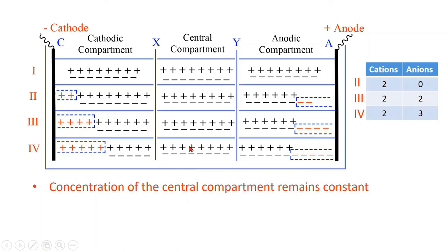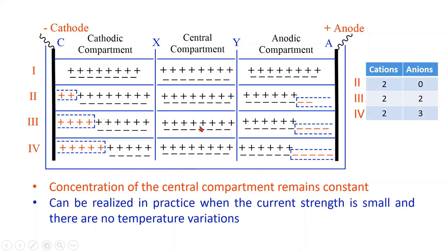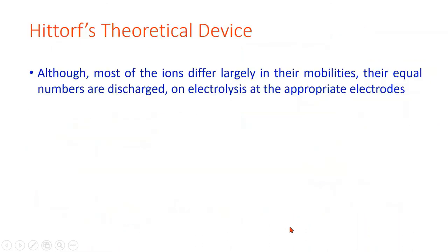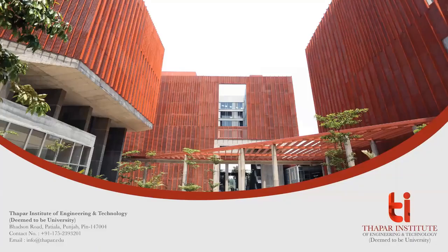The concentration of the central compartment remains constant, which can be realized when the current strength is small and there are no temperature variations. Hence, although most of the ions differ largely in their mobilities, equal numbers are discharged on electrolysis at the appropriate electrodes. Thanks for watching this video.